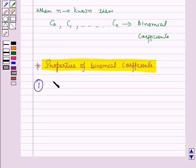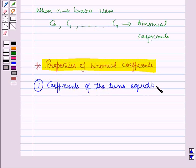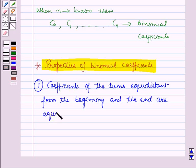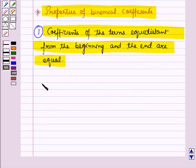The first property is: the coefficients of the terms equidistant from the beginning and the end are equal. That is, the terms which are equidistant from the beginning and the end have equal coefficients. Now let us prove this property.